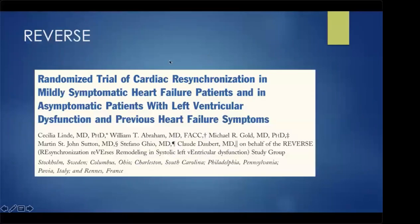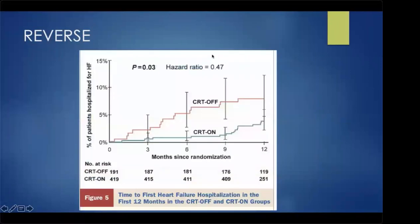REVERSE included people with class 2 to 3 heart failure, EF of 40%, and a wide QRS with signs of mechanical dyssynchrony on echo. All patients got a biventricular device, but were randomized to either CRT off or CRT on. In this population, there was a significant reduction in heart failure.